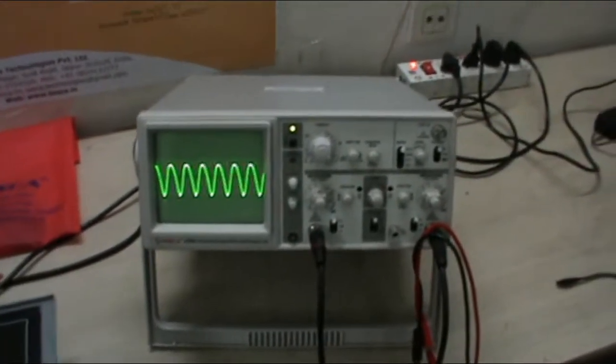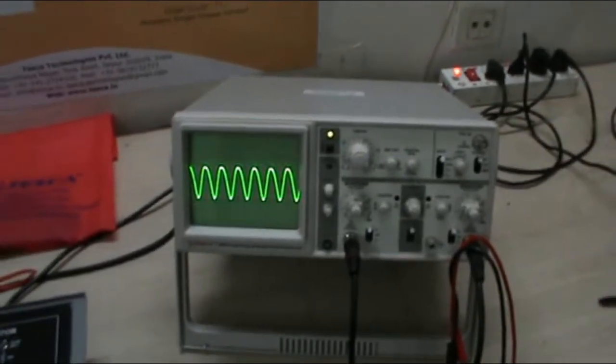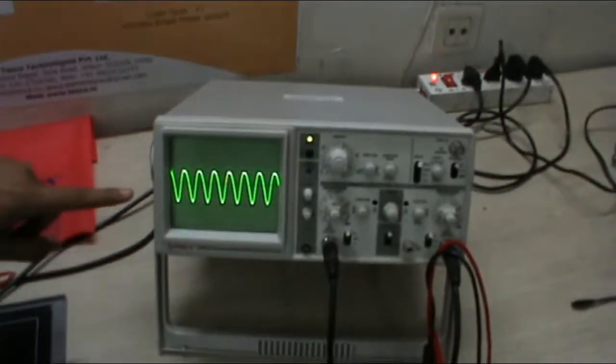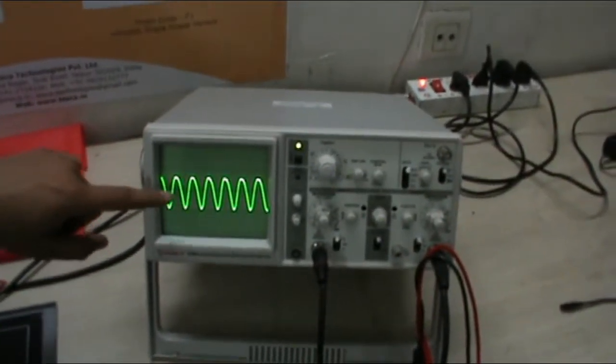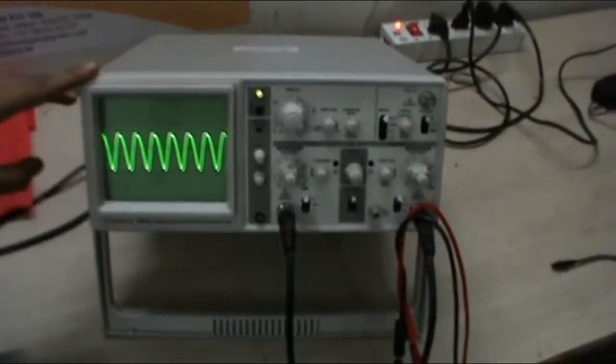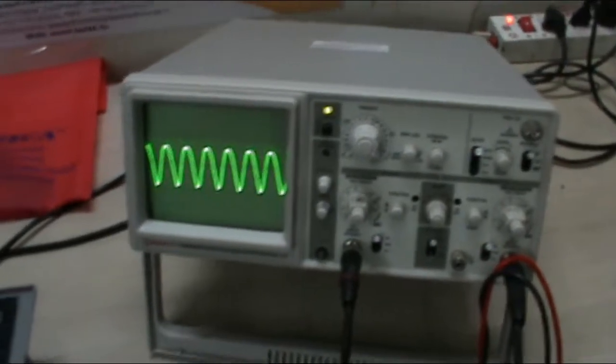Now, this is the output waveform of the Hartley Oscillator. In this, if we vary this frequency meter, we will see the difference in the waveform. It shows just a very minimal variation in the frequency of the output waveform. This is the working of Hartley Oscillator. Now, the second experiment.